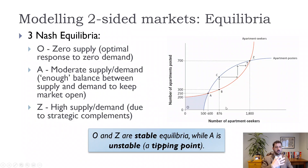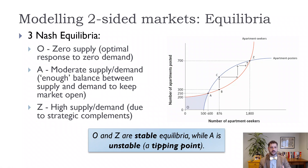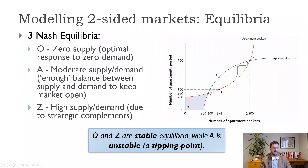What we end up with is three possible equilibria. First, we have the zero-zero equilibrium, labeled O, which is definitely a stable equilibrium: there's nobody looking for apartments so there are no apartments posted, and there are no apartments posted so nobody is looking — and there's nothing to push us out of that equilibrium. So if you're starting up the next Airbnb, you have to think about how to get enough buyers and sellers to get the market moving. Point A is our tipping point: if we're below point A, we get pushed back to O.